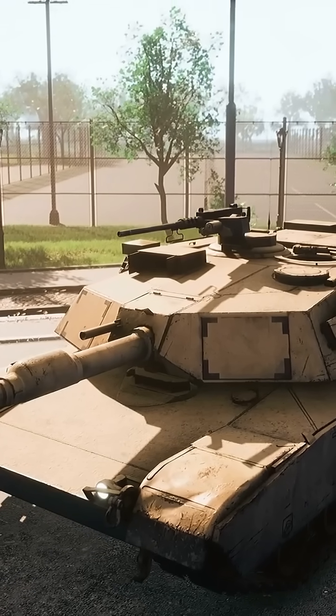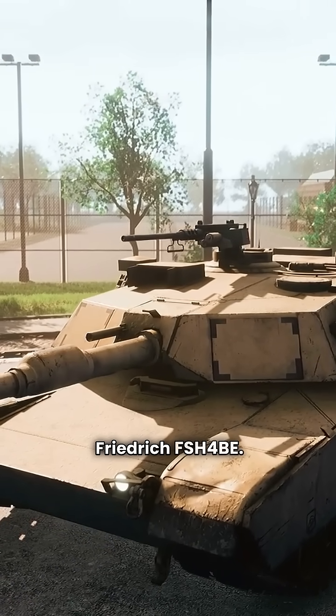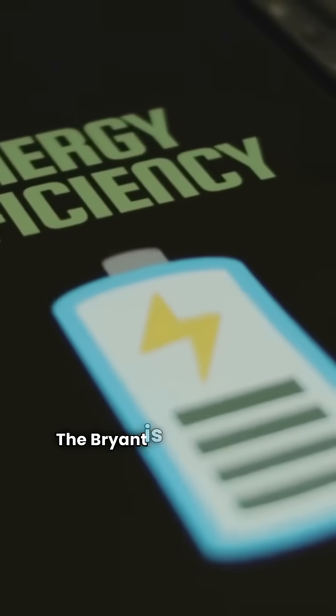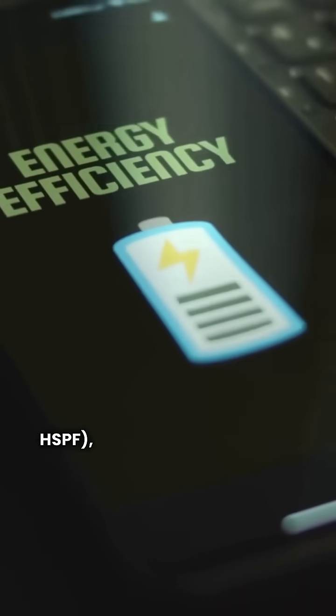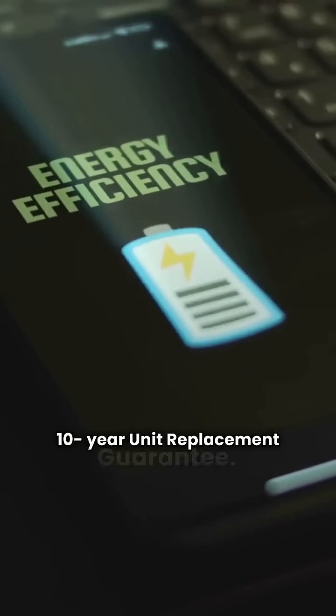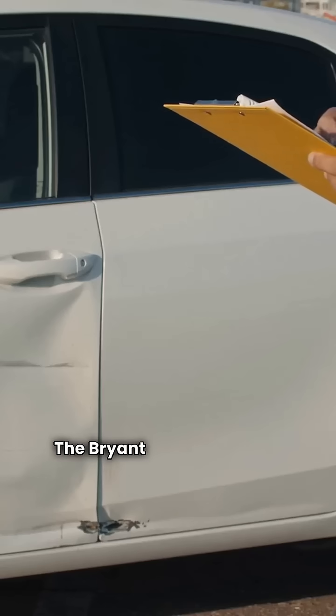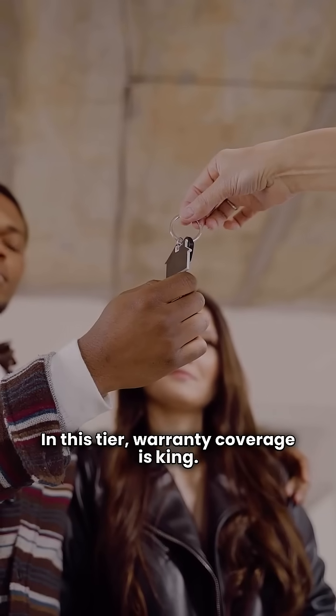In the basic tier, Bryant 127A versus Friedrich FSH-4BE, the Bryant is slightly more efficient, 7.8 HSPF, but the Friedrich comes with a 10-year unit replacement guarantee. The Bryant 127A offers zero. In this tier, warranty coverage is king.